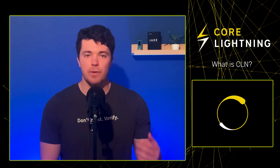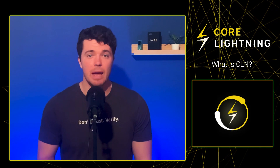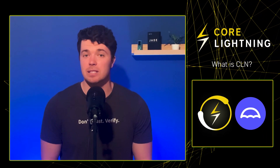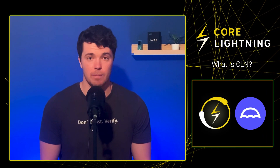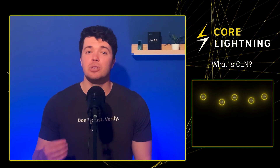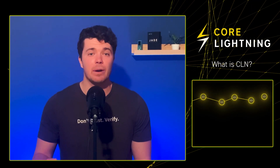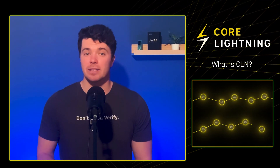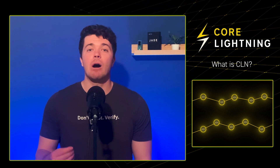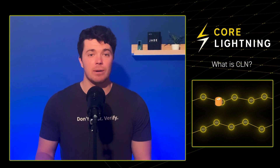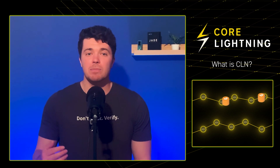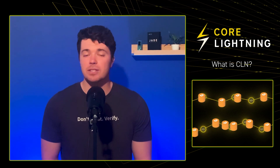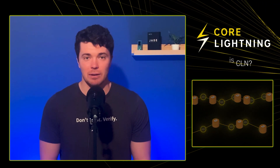Recently, developers from the Blockstream team have created an app which is available directly when installing CLN on Umbrel. The CLN app allows you to send and receive Bitcoin, open and close Lightning channels, transact via the Lightning Network, and route payments through it. With this in mind, let's navigate to our Umbrel server, install the CLN app, and open our first channel.